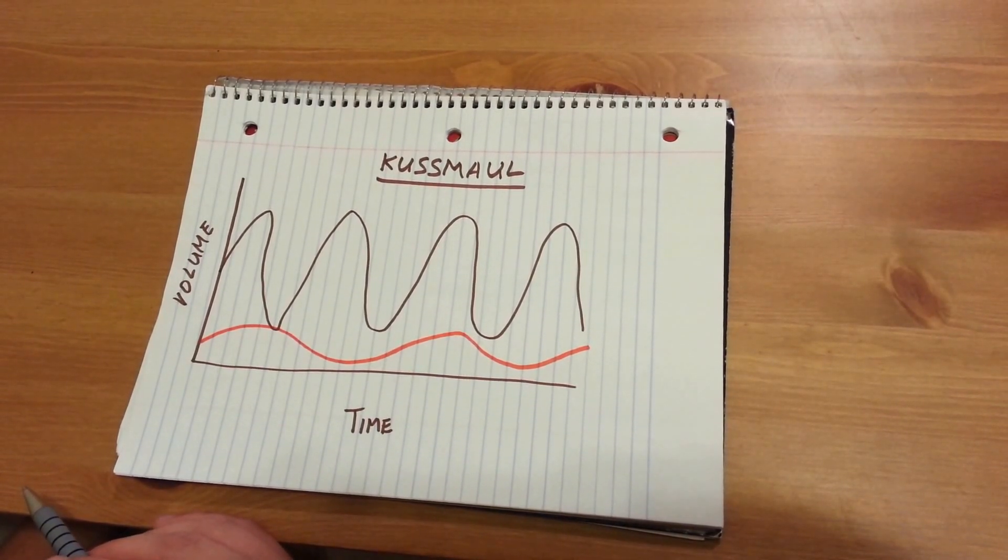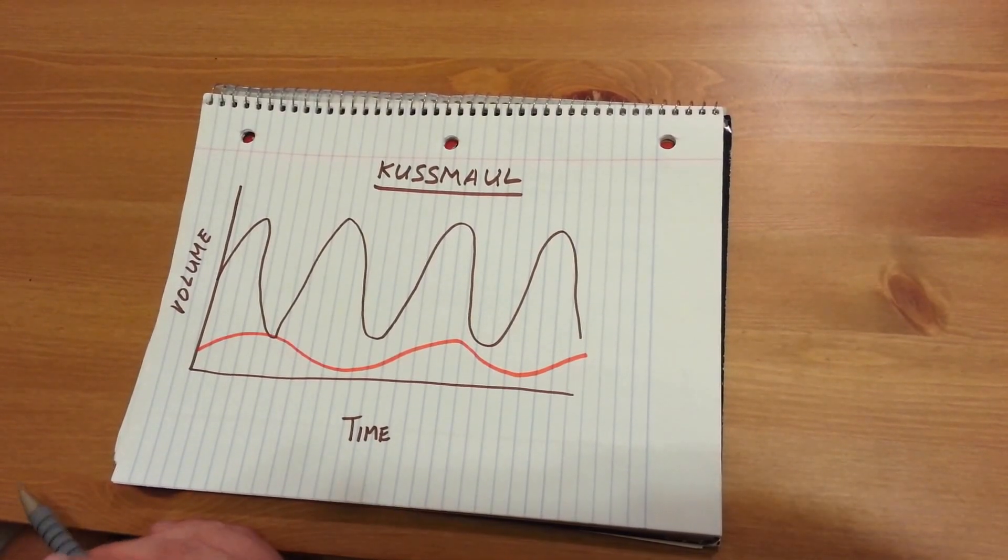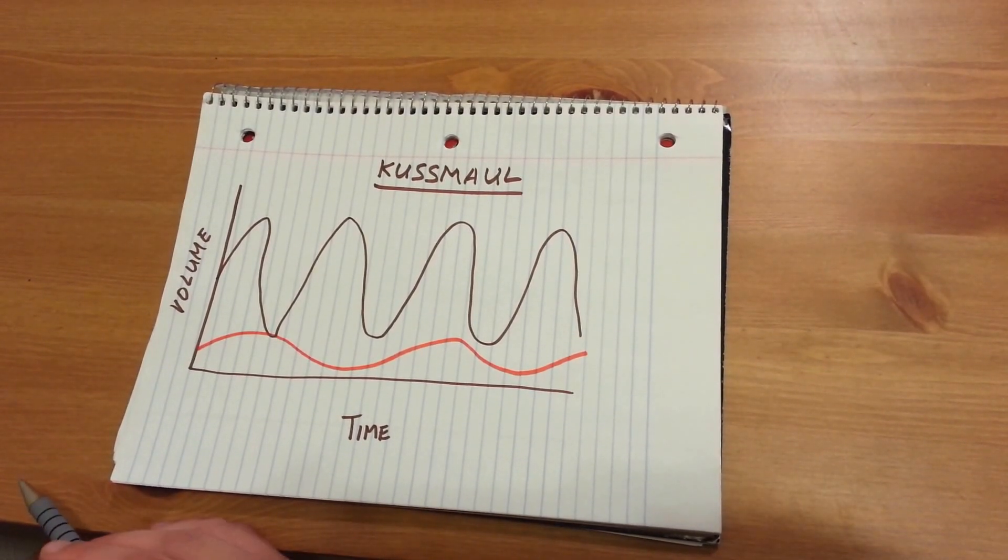Blowing off this excess carbon dioxide lowers the acidity of the bloodstream by lowering the amount of carbonic acid and free protons or acid in the bloodstream.